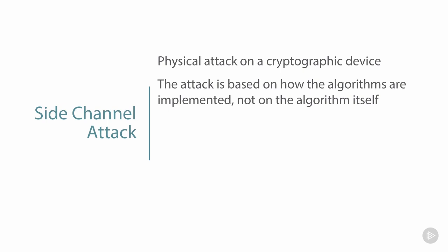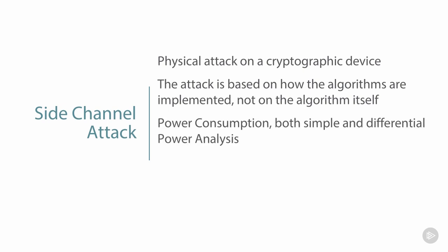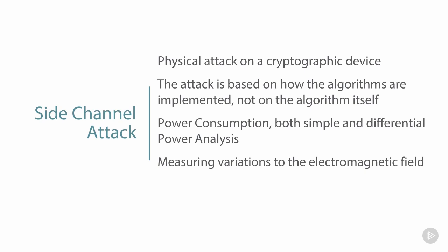There are a few ways to do this. One is power consumption — we can do what's called simple or differential power analysis. Certain operations running through these algorithms consume more power, so by monitoring power consumption as the device works through an algorithm, we can start to detect what changes are occurring. We can also measure variations in the electromagnetic field on a chip as it's doing calculations, and glean information from that.